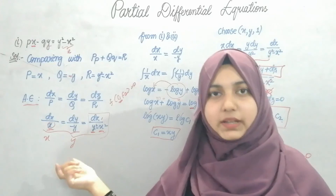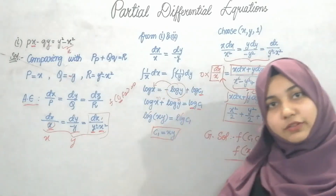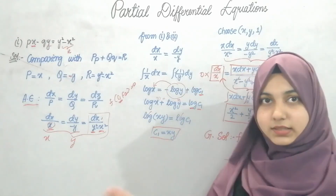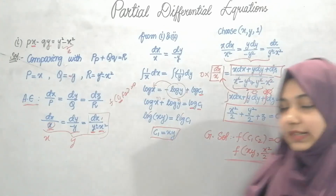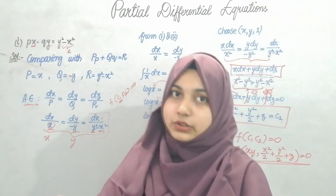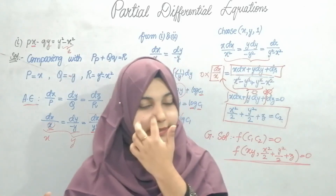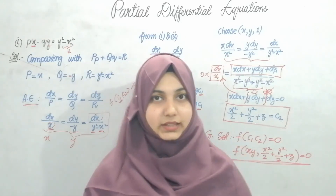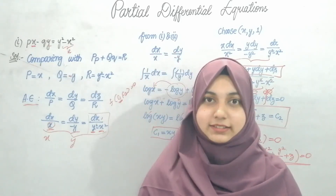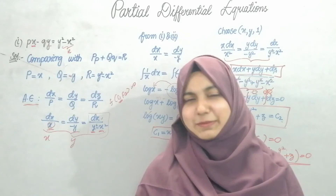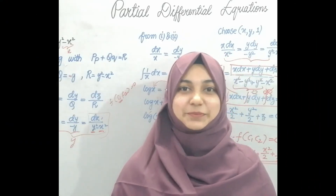So that's how we found C1 and C2. In the next videos, we'll see the rest of the types — nonlinear PDEs, Type 1, Type 2, Type 3, Type 4, and Charpit's method. That's it for this video, thank you.